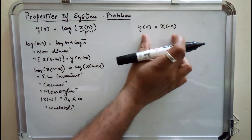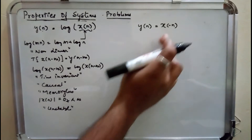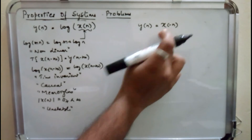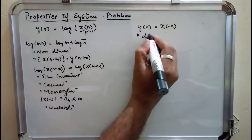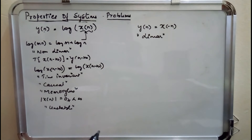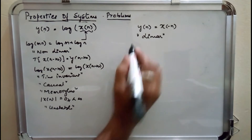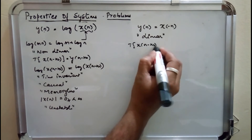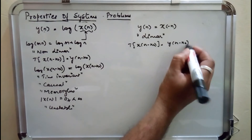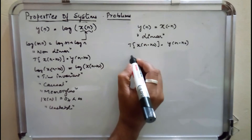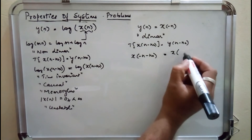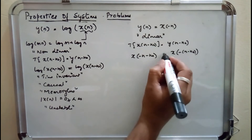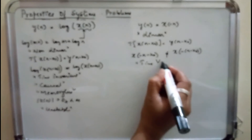The sixth problem: y(n) = x(−n). By inspection, replacing x(n) by a·x1(−n) + b·x2(−n), it is a linear system. For time invariance, T{x(n − n₀)} = x(−n − n₀), whereas y(n − n₀) = x(−(n − n₀)) = x(−n + n₀). These two are not equal, so it is a time variant system.